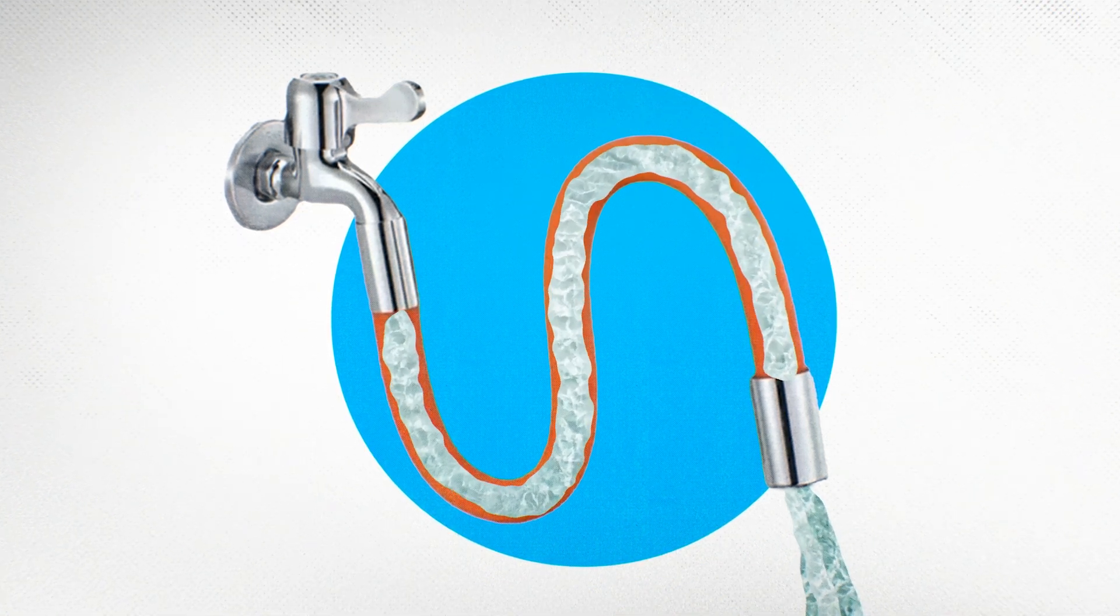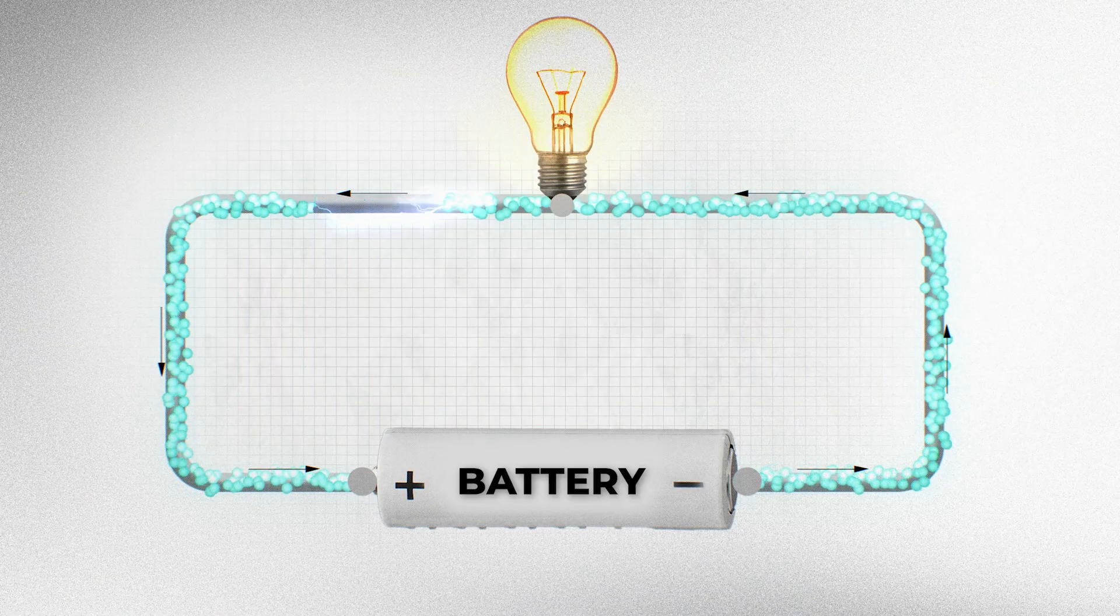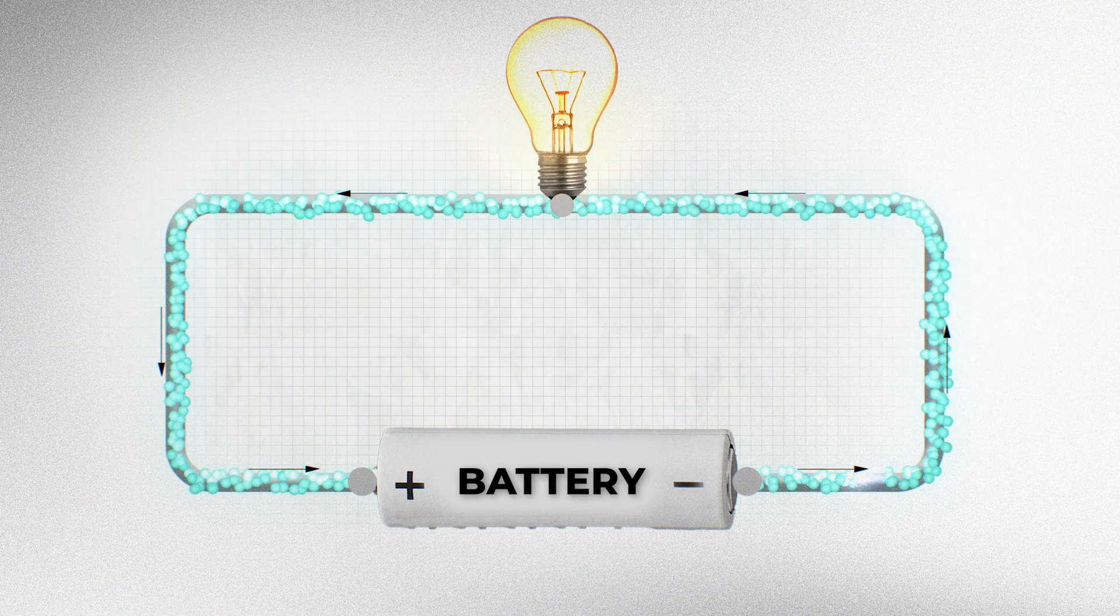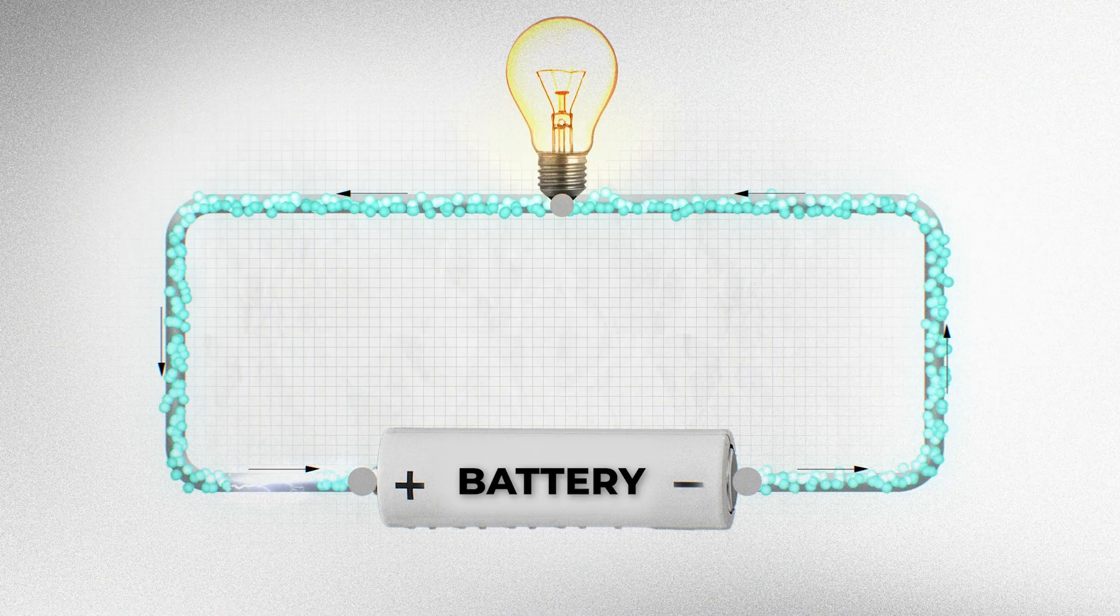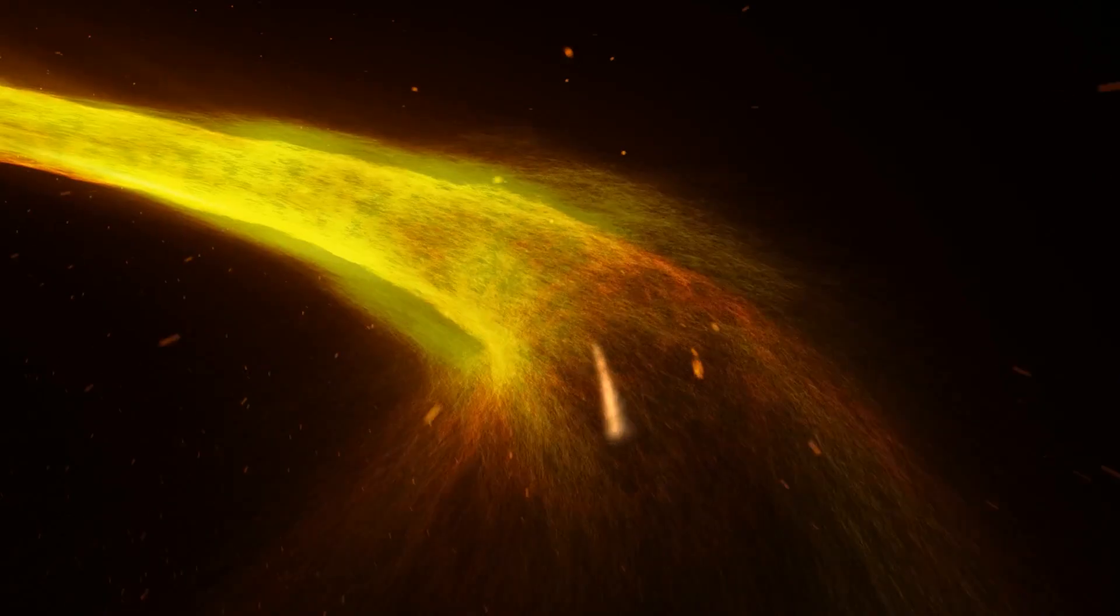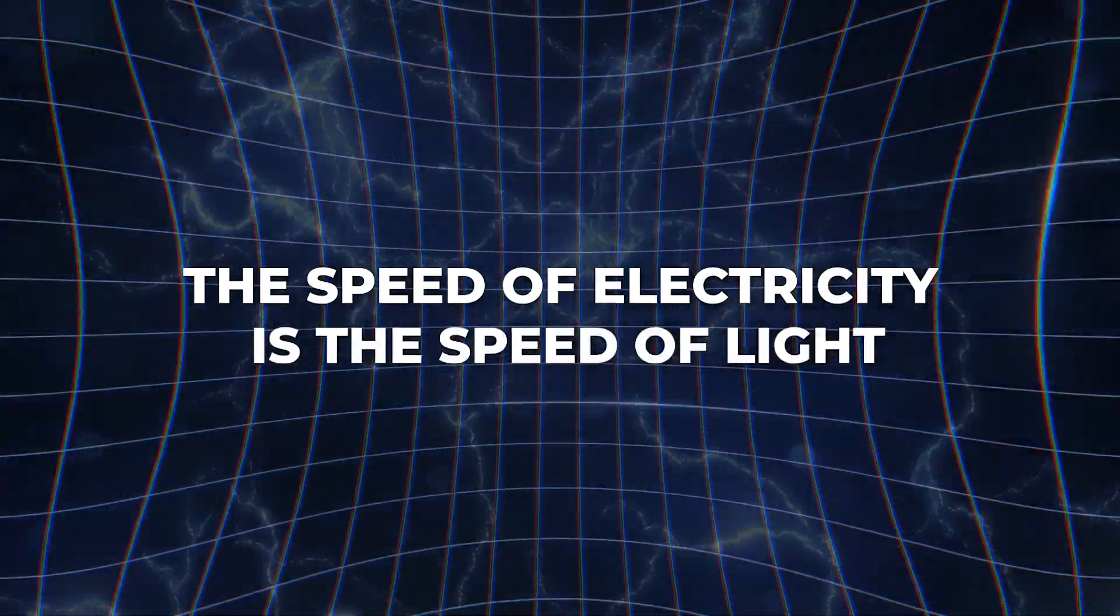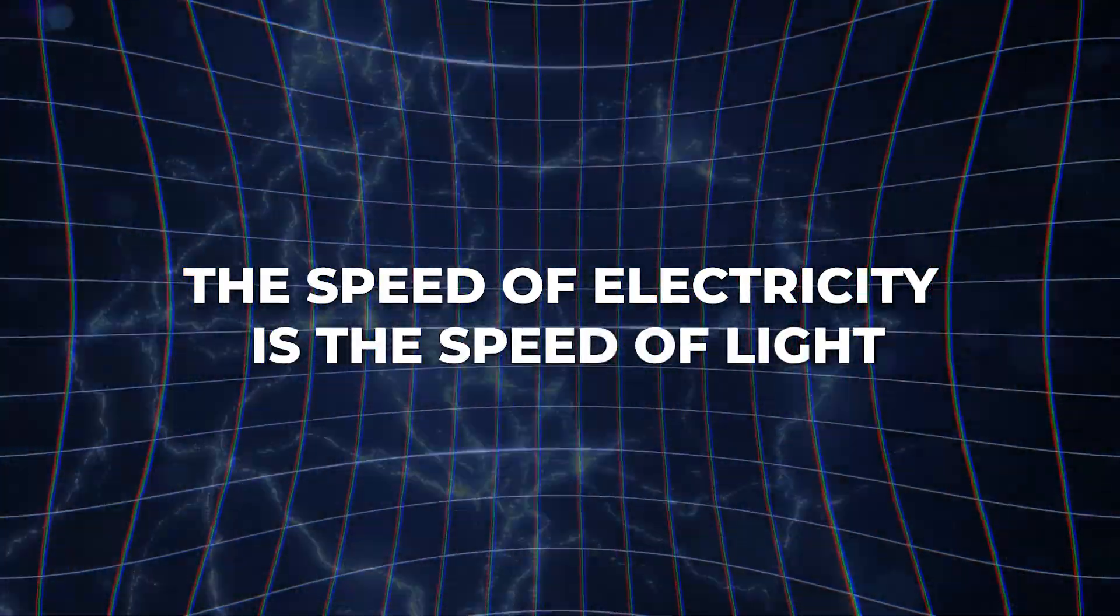The second case is the closest to how electrical wires work. The wire is always filled with electrons and the electric field pushes these electrons forward. And at what speed does this electron field spread? At the speed of light. In other words, the speed of electricity is the speed of light. Okay, second question answered.